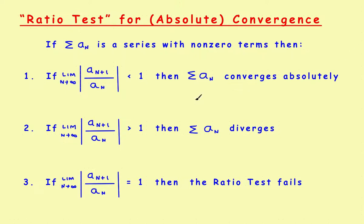This is a video on the ratio test. If you look it up in your book, it looks complicated, but for most students the ratio test is not that difficult to work with. They can execute it, get an answer, and off they go. The problem is, even if you've got the answer, for a lot of students it's hard to understand exactly what the ratio test is and why it works. So in this video, rather than working a specific example, we're going to look at the ratio test graphically and try to understand why it works.